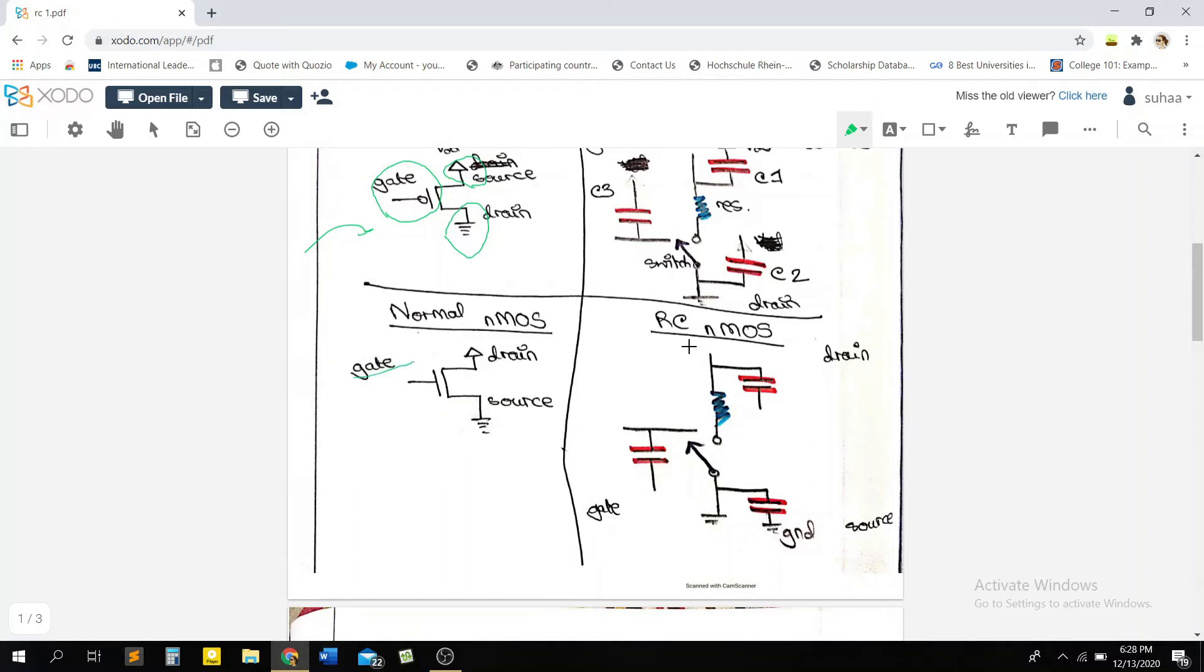And the representation of RC of an NMOS is exactly the same. You're gonna have three capacitors connected to the gate, drain, source and a resistor and a switch in series.